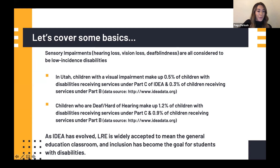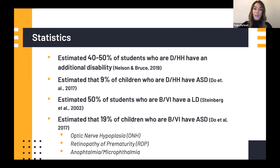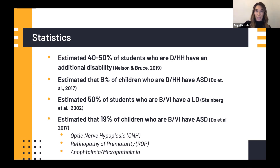Some interesting statistics especially relevant to school psychologists: it's estimated that about 40-50% of students who are deaf or hard of hearing have an additional disability, including ASD, intellectual disability, ADHD, or speech-language impairment. It's estimated that 9% of children who are deaf/hard of hearing have ASD — a big difference from the 1.8% prevalence in the general population. An estimated 50% of students who are blind or visually impaired also have a concomitant learning disability, and 19% of children who are BVI have ASD — a huge difference from sighted children in the general population.